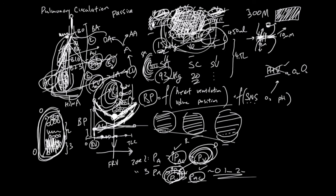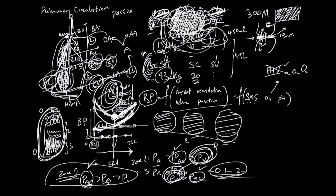Zone 1 occurs when alveolar capillary pressure is greater than artery pressure, which is greater than vein pressure. This can happen with positive pressure ventilation, which raises the alveolar space pressure so it overcomes artery pressure. It also occurs in shock, when the body is losing blood and artery pressure drops. Zone 1 is a pathogenic zone — wherever this inequality holds, that region is Zone 1.